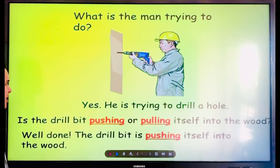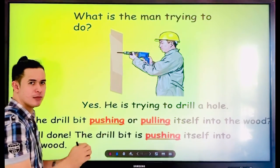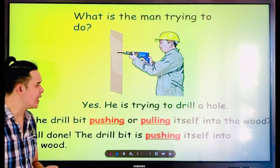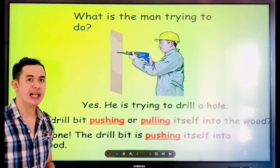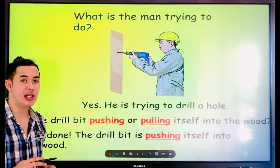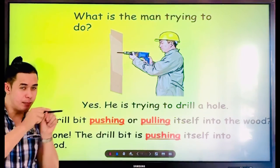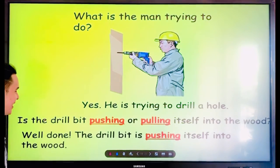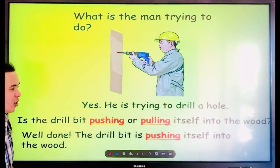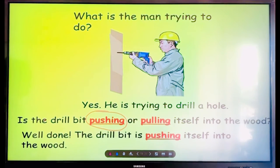What is the man trying to do? He is a carpenter. There is wood, a drill, and the man. He put the drill in the wood. He is trying to drill a hole because he is a carpenter. Is the drill bit pushing or pulling itself into the wood? The answer is pushing — the drill bit is pushing itself into the wood.